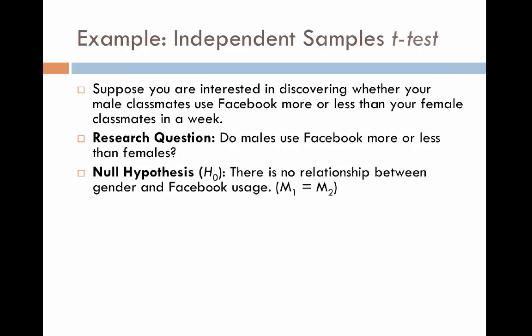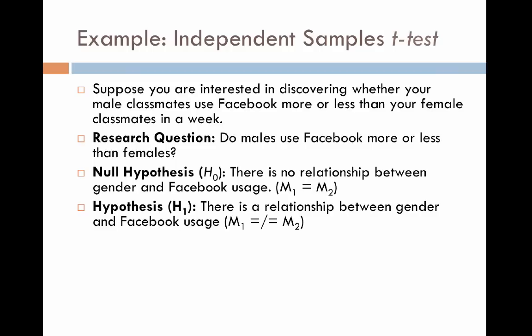Our null hypothesis might be: there is no relationship between gender and Facebook usage — males and females' average usage will be equal, or not significantly different. Framing this as a hypothesis, we might say: there is a relationship between gender and Facebook usage. We just don't know if males use it more than females or females use it more than males. The shorthand would be: the average of one population is not equal to the average of the second population.